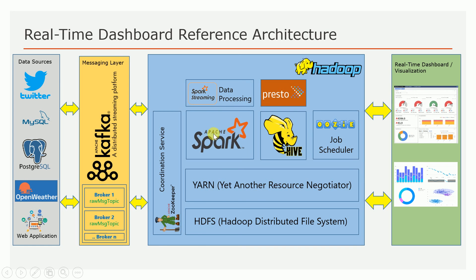For people familiar with Hadoop, they know the two main components: HDFS and YARN — Yet Another Resource Negotiator — which is the resource management component. We also use Hive. Once you consume the message from the Kafka topic in the Spark Streaming app, you do some processing and write it into HDFS.